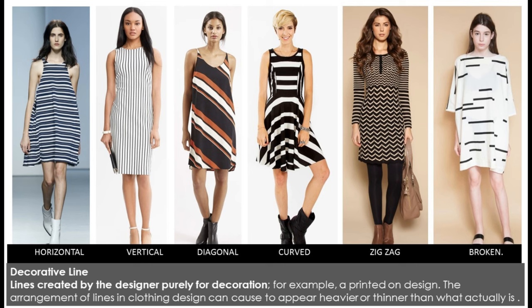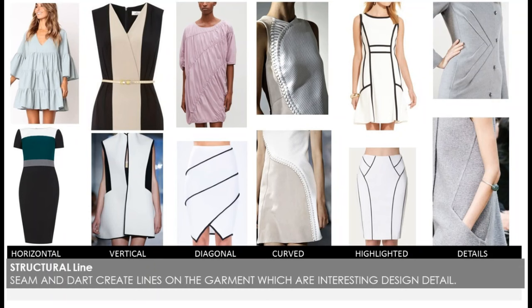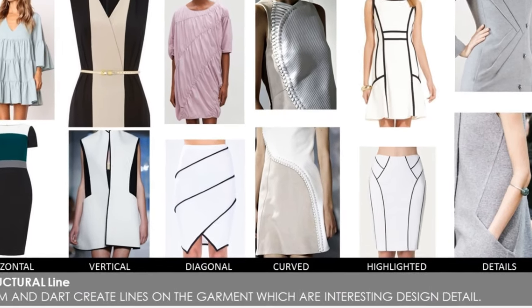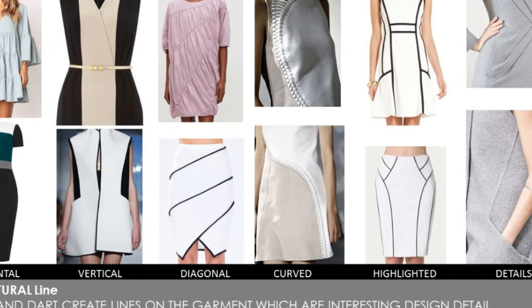Types of decorative lines include horizontal, vertical, diagonal, curved, zigzag, and broken. Structural lines, known as seam lines, divide an enclosed space on a garment. Designers use different seam and dart placements as interesting design details. On this slide you can see horizontal, vertical, diagonal, and curved lines highlighted as seam lines.